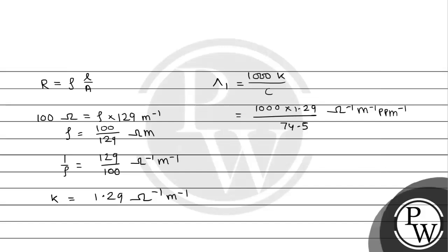Now for the second case, 50 equals ρ times 129, the cell constant. So ρ will be 50 divided by 129 Ω·m.